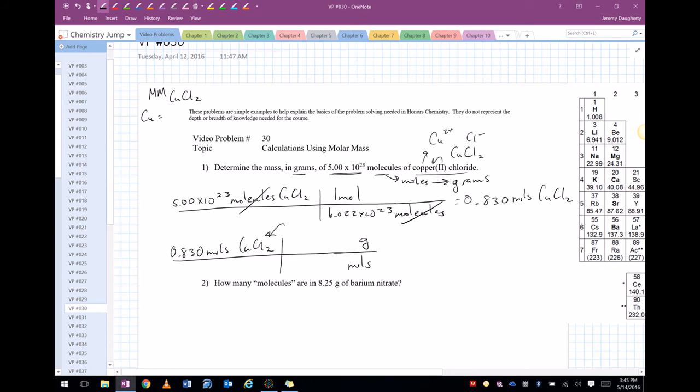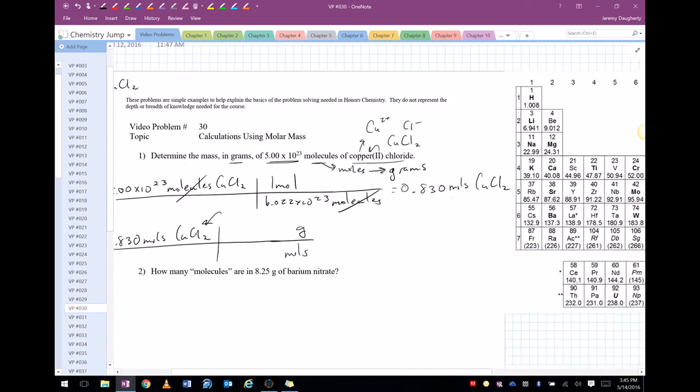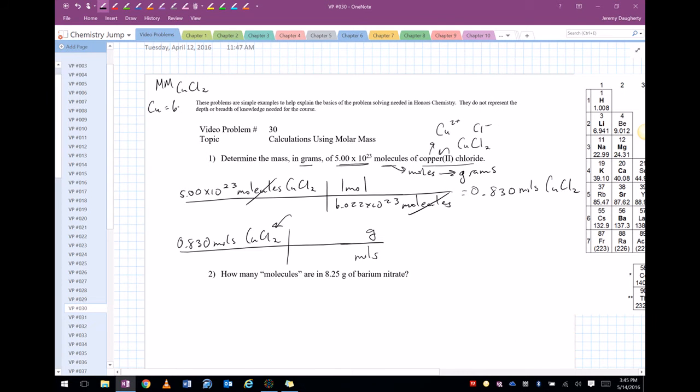I've got a copper, which each copper weighs something like 63.55. And then I've got two chlorines. So each chlorine weighs 35.45 times 2. So I'm going to just add that up. So I've got a value of 134.45 grams per mole. All right, so 134.45 grams goes into one mole down there.